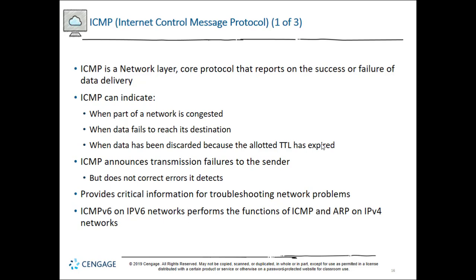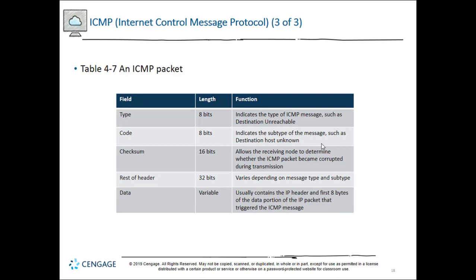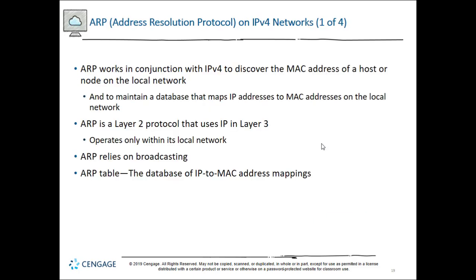ICMP works the same on IPv4 as IPv6. The main difference is there's no ARP on IPv6 — ARP is an IPv4 function. ARP, Address Resolution Protocol, is used for IPv4. If I know your IP address but not your MAC address and need to send you information, ARP works in conjunction with IPv4 to learn those items.